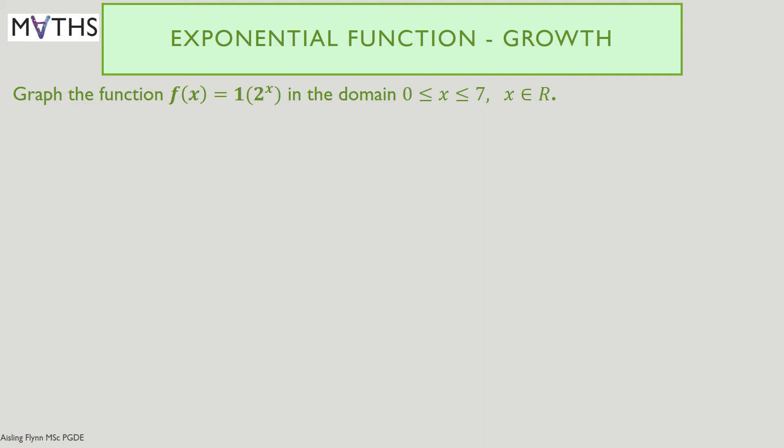Here we're asked to graph the function f(x) = 1 × 2^x in the domain from 0 to 7. This is the simplified case of our virus. The number 1 represents the first person that has it on day 0, and the number 2 represents the reproduction factor of 2. And x will be how many days.